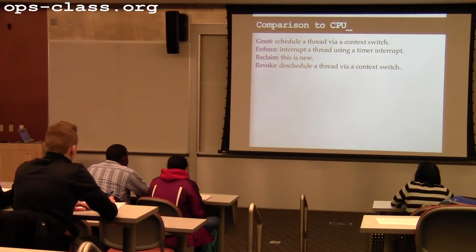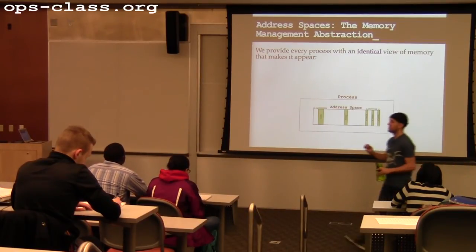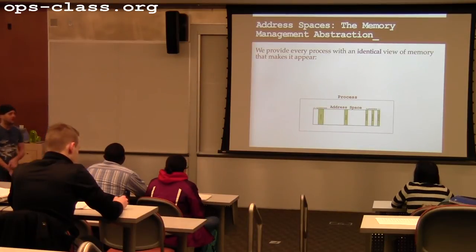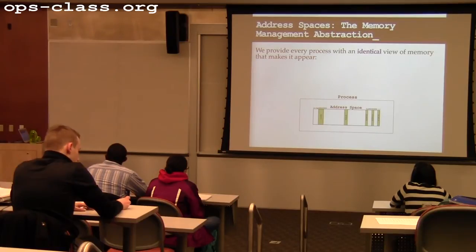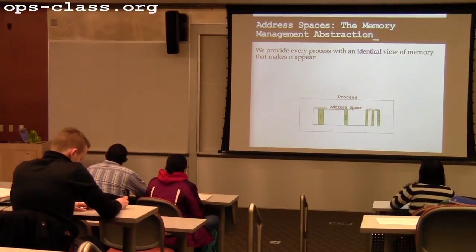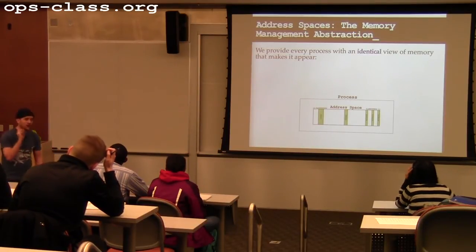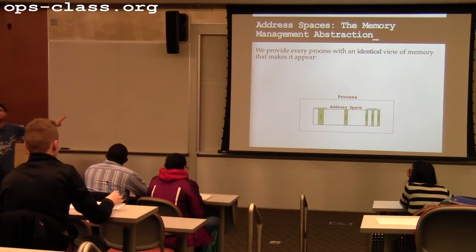We can map these memory requirements onto CPU multiplexing concepts. With the CPU, we had the thread abstraction. With memory, we have a similar abstraction called an address space. Address spaces allow every process to have an identical view of memory — identical for every process on the system and every time they run. So every time an identical process runs, regardless of the state of the system, it has an identical view of memory.